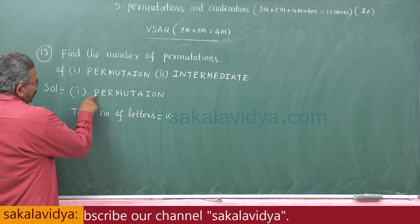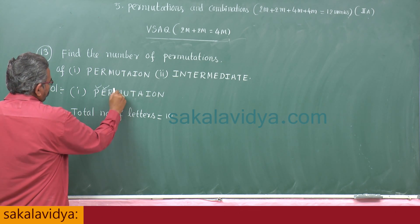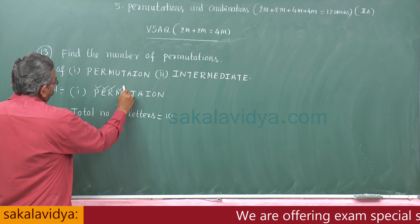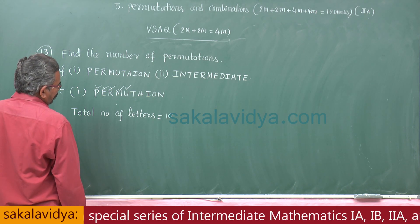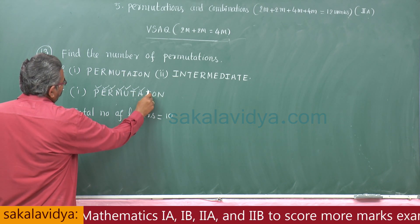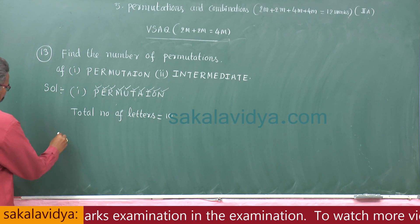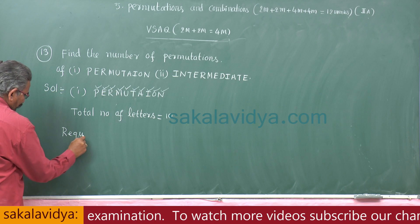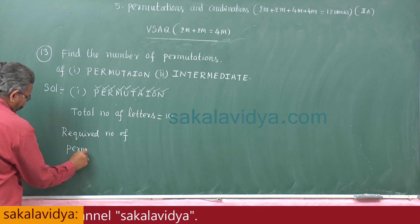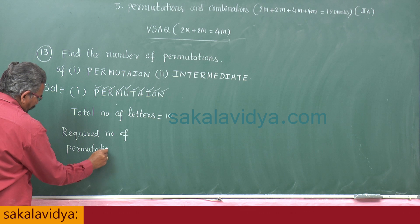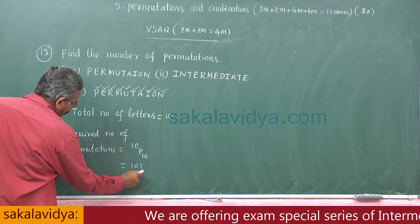Out of them: how many P's? Only 1. How many E's? Only 1. How many R's? Only 1. How many M's? Only 1. T only 1, A only 1, I only 1, O also 1. There is no repetition. That is why the required number of permutations is 10P10, which is nothing but 10 factorial. That is the answer.